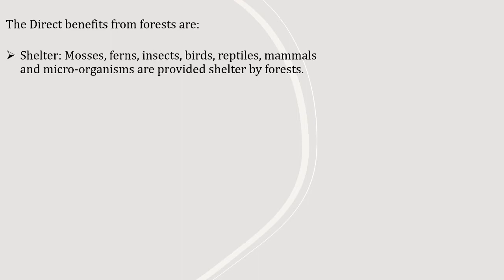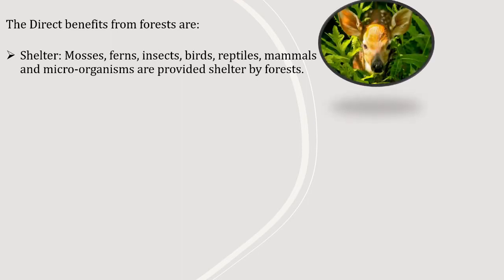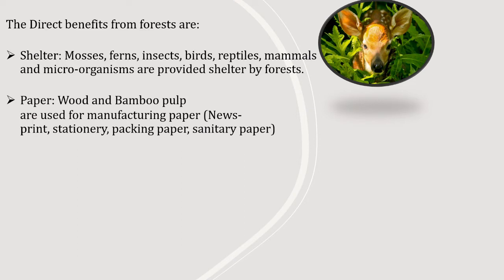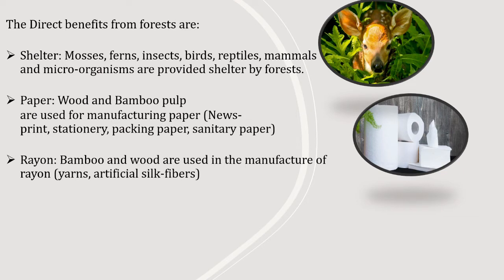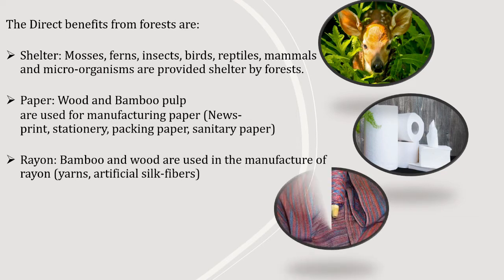More direct benefits from forest: shelter for mosses, corn, insects, birds, reptiles, mammals, and microorganisms is provided by forest. Many herbivores find shelter and carnivores find hunting in the forest. Water is also available in the forest. Paper: wood and bamboo pulp are used for manufacturing paper — newsprint, stationery, packing paper, sanitary paper. Bamboo and wood are used in the manufacture of rayon, yarn, and artificial silk fiber.